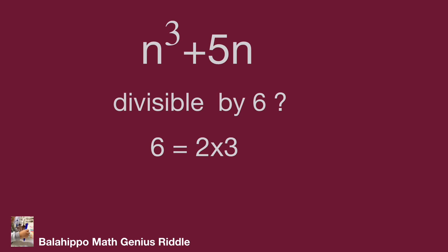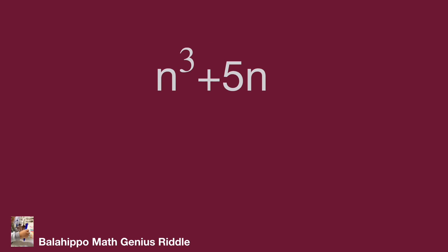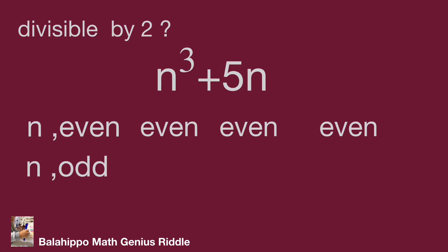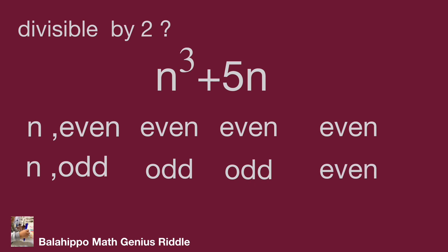Let's prove n cubed plus 5n is divisible by 2. When n is an even number, then n cubed is even and 5n is even, so their sum is an even number. When n is an odd number, then n cubed plus 5n also becomes an even number. So no matter whether n is even or odd, n cubed plus 5n is an even number — that means it is divisible by 2.